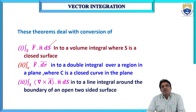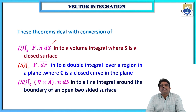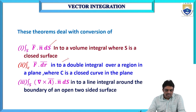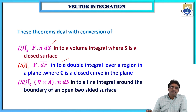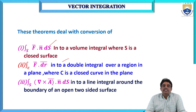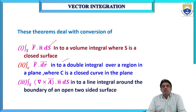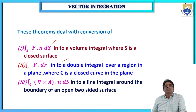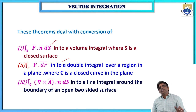In the second theorem, the integral F̄ · dR̄ over the closed curve C converts into a double integral over a region in a plane, where C is the closed curve in the plane. The third theorem is the integral over S of (∇ × Ā) · n̄ dS converted into a line integral around the boundary of an open two-sided surface. These three theorems are useful in finding the relation between volume, surface, and line integrals. Now first we see the Gauss Divergence Theorem.